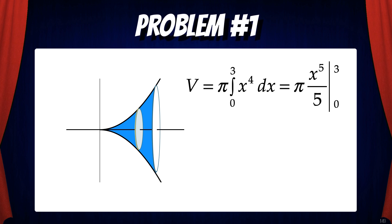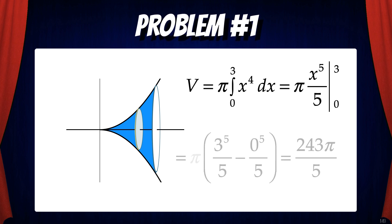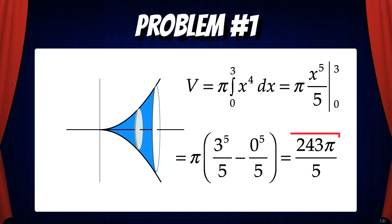Plugging in 3 and 0, we get π times (3⁵/5 minus 0⁵/5), which equals 243π/5. And that's the volume of the solid of revolution.